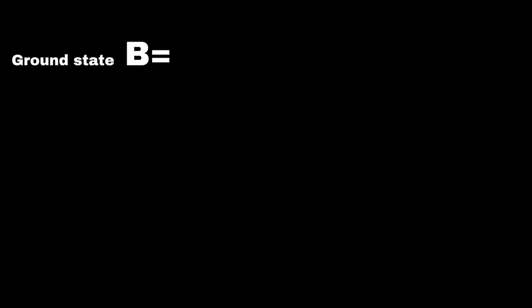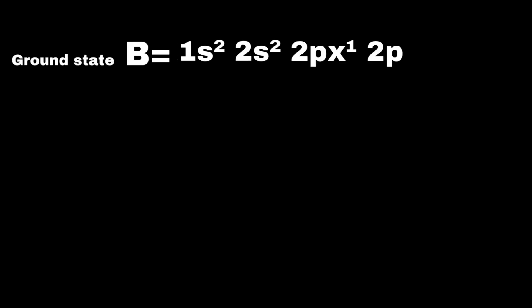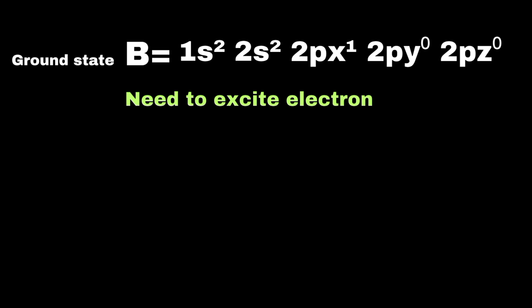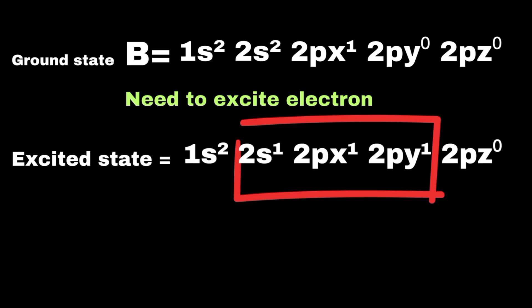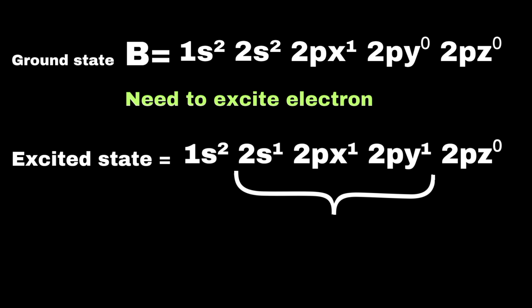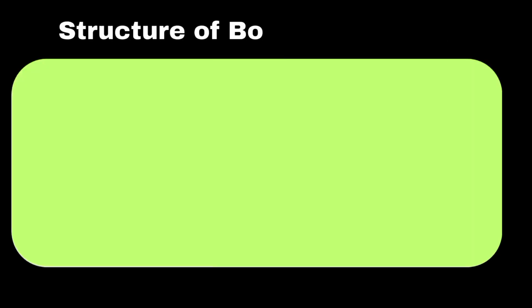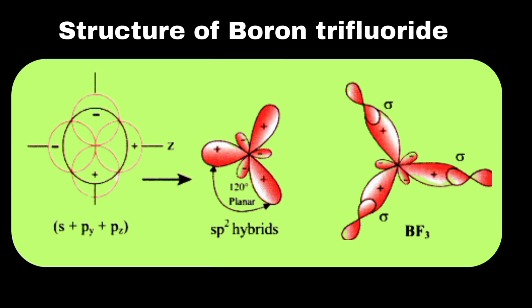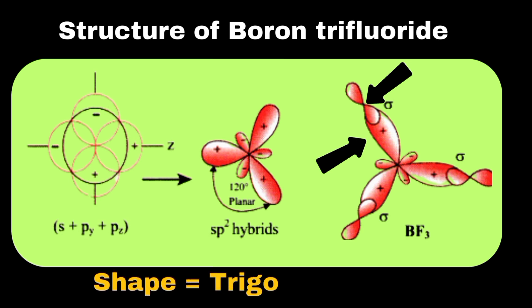The atomic number of boron is five, and its electronic configuration shows one electron in the 2px orbital, while 2py and 2pz are empty. We need to excite one electron from the 2s orbital to the 2py orbital, giving the excited state configuration. The 2s orbital then intermixes with the 2p orbitals to form three sp2 hybridized orbitals, while the empty 2pz orbital is not considered. Three hybridized orbitals of boron form single bonds by head-to-head overlapping with 2p orbitals of fluorine. The shape of boron trifluoride is trigonal planar and the bond angle is 120 degrees.